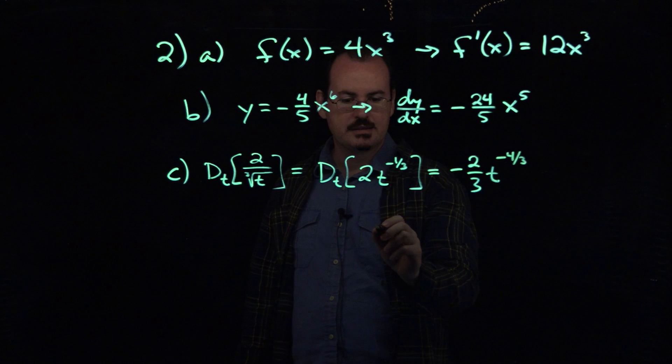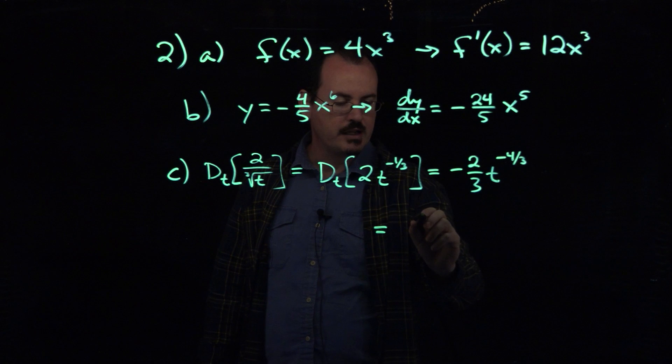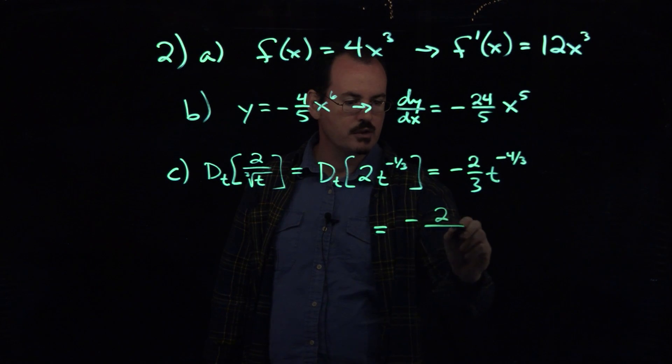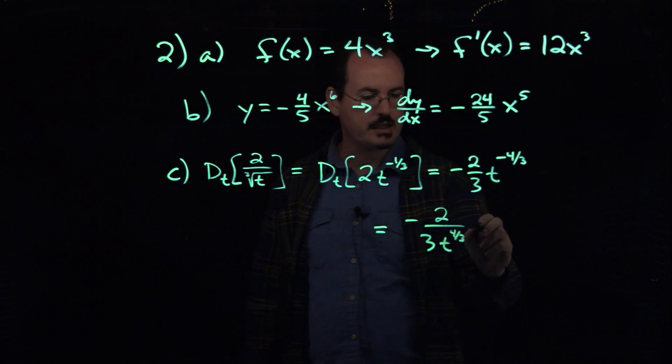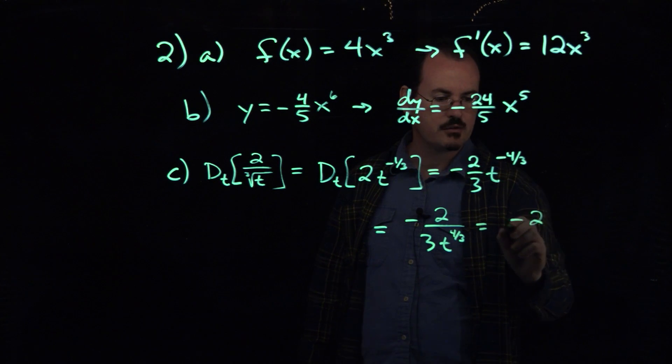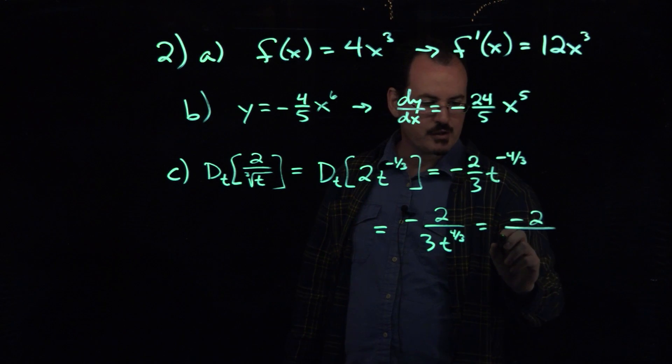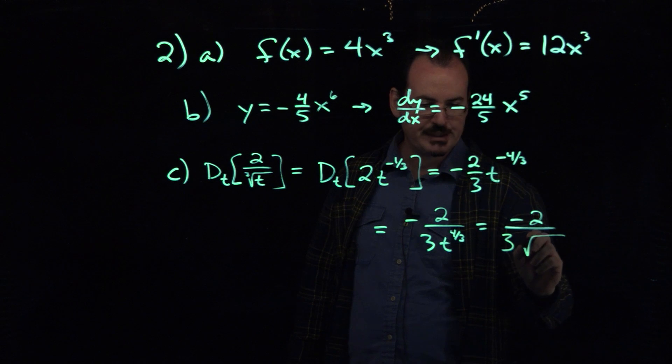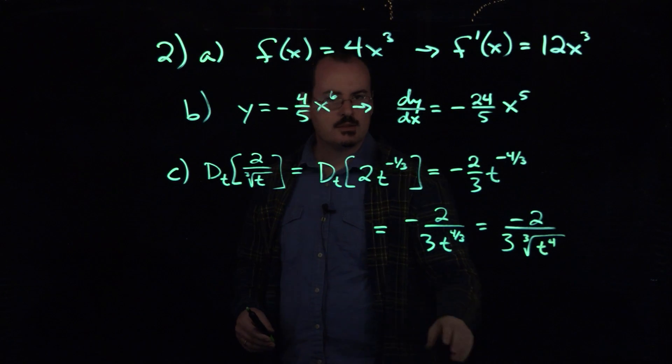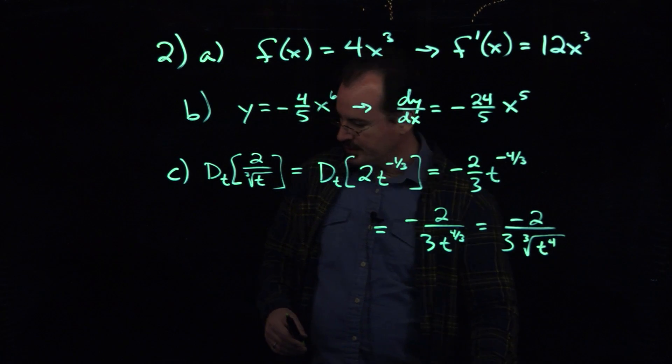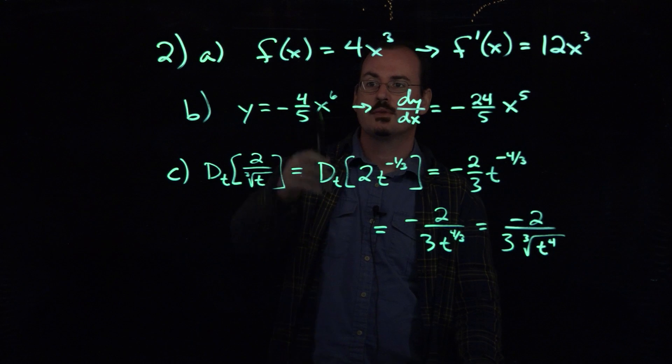If I wanted to write this as something with roots and powers as the final answer, since there's a negative there, I can write it as negative 2 over 3t to the positive four-thirds power. And if I wanted to take that further, the 3 in the denominator means it's a cube root. The 4 in the numerator means it's to the fourth power. So if I want to write this with roots and powers, it's the cube root of t to the fourth power. So there's the derivatives of all the functions in example 2 for using the power rule with coefficients.